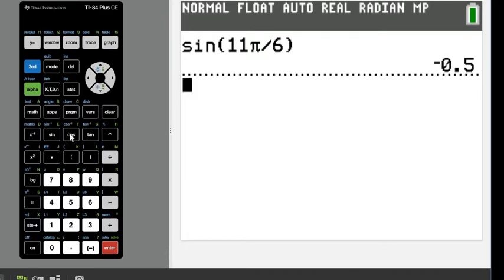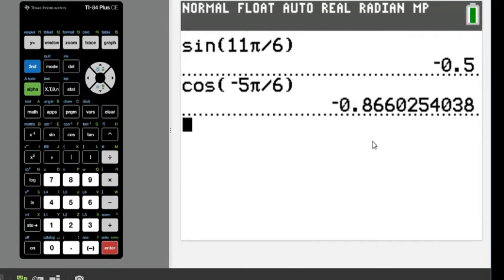The next one we were asked to find was cosine of negative 5 pi divided by 6. And for this one, it is an approximate value, so this is negative 0.8660254038. Typically, we round to either 3 or 4 decimal places in trig, so just make sure that you look at your homework to see how many places you need to round to.